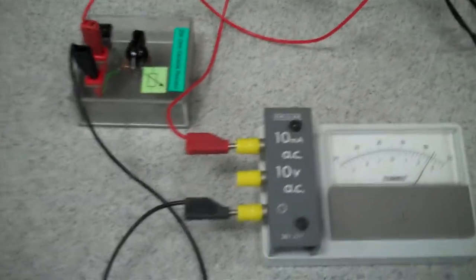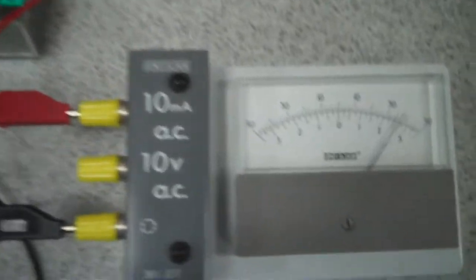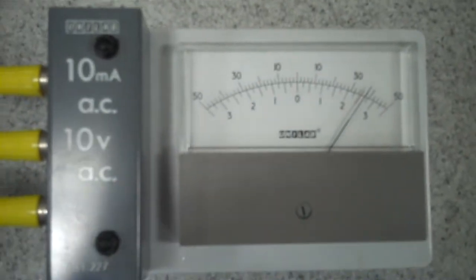So firstly, how does frequency affect the current in a resistor circuit? Let's just zoom in on this ammeter, and we're going to change the frequency.